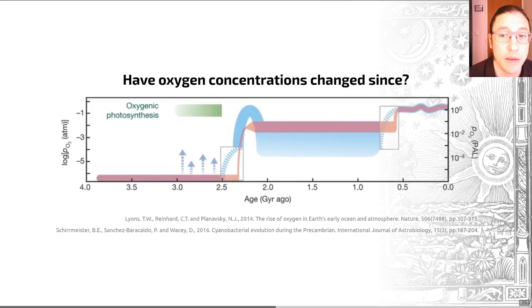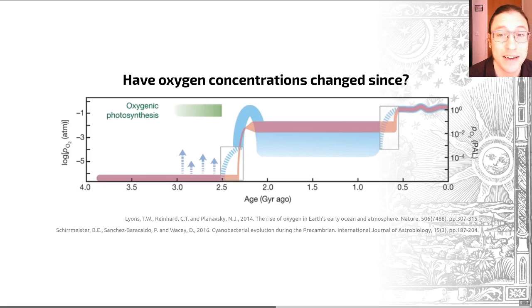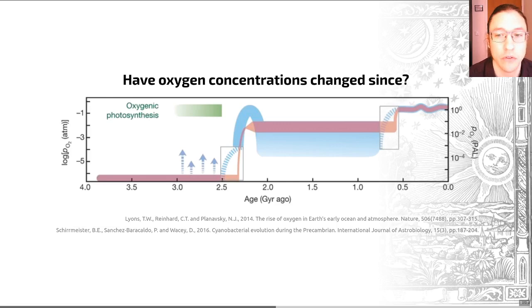Cyanobacteria were the first organisms to evolve photosynthesis that releases O2 on the planet. Things like plants not only came much later — they actually make use of cyanobacteria to do their photosynthesis for them. More on this later in our Zoom chat if you want to ask about it.